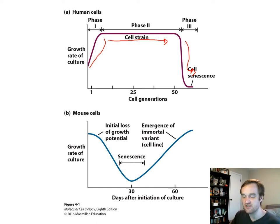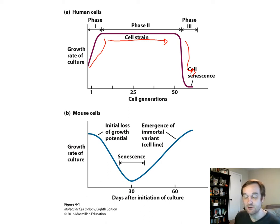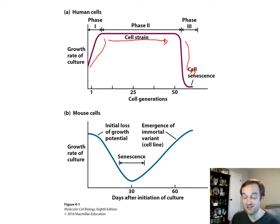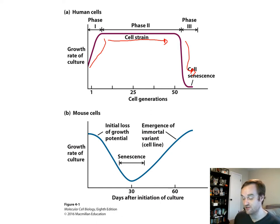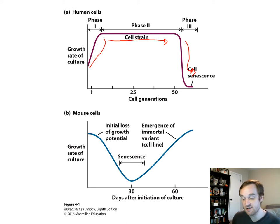There is a specific cell line called HeLa — H-E-L-A — established back in 1952 from a malignant uterine cervix carcinoma tumor. That cell line is immortal, so it will continue to reproduce as long as you feed it and give it proper spacing. That cell line is still used today.